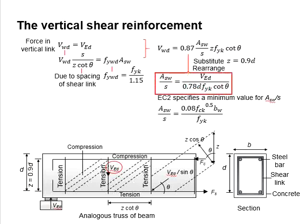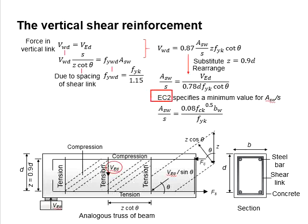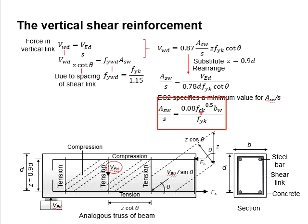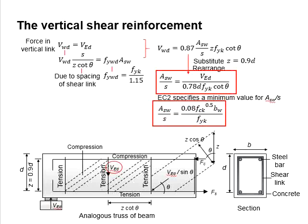You may use these equations to determine the amount of shear reinforcement required in the member. Eurocode also provides a minimum value for Asw per S. The calculated amount of shear reinforcement must be at least greater than the minimum specified in Eurocode.